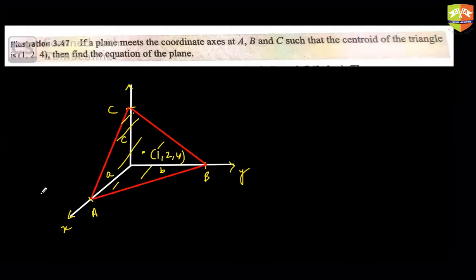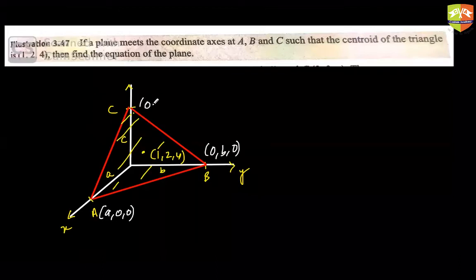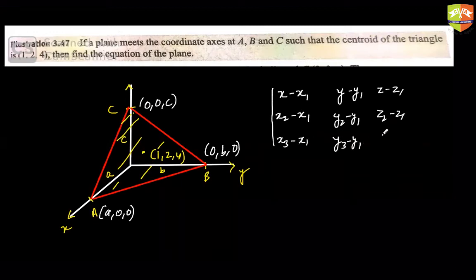So when you have been given x intercept, indirectly you have been given the coordinates of a, which is nothing but (a, 0, 0). When you have been given y intercept, you have been given the coordinates of b, which is (0, b, 0). And you have been given the coordinates of c, (0, 0, c). So when you know three points, we have already discussed how to find the equation of a plane. So when three points are known, we just use the formula: (x-x1), (y-y1), (z-z1); (x2-x1), (y2-y1), (z2-z1); (x3-x1), (y3-y1), (z3-z1) equal to 0.